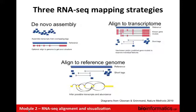The strategy the community has settled on as most common is aligning to the reference genome. This can only be done if reads are sufficiently long to allow spliced alignments — you need enough sequence on either end to anchor on one exon and figure out where the intron boundaries are and where the next exon continues. This is the strategy we're going to use.